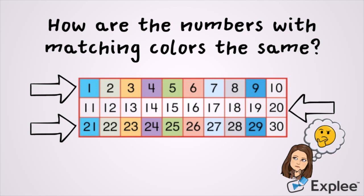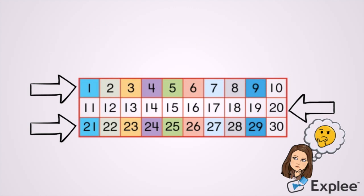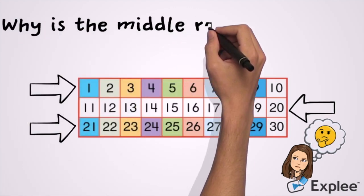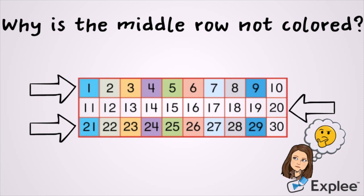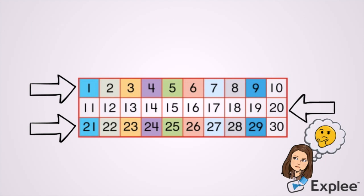Well, when I say those numbers I hear the number one in both numbers. Look at that middle row. Why do you think that it's not colored in? When you say the numbers in the middle row you don't hear the same numbers. Listen: 1, 21, 11. When you say the number 11 you don't hear the number one.